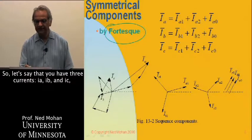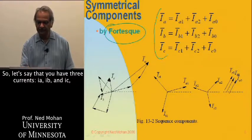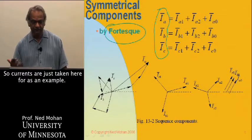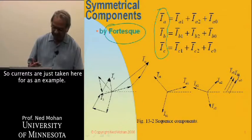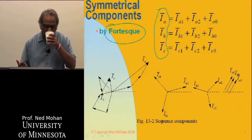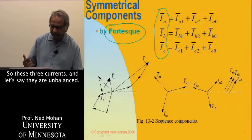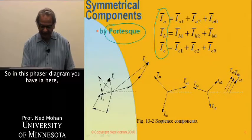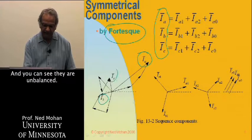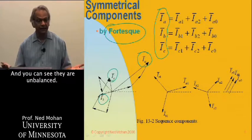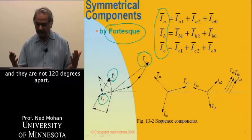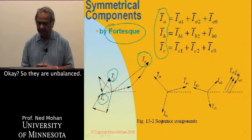Let's say you have three currents, Ia, Ib, and Ic. By the way, these could be voltages. Currents are just taken here as an example. These three currents, let's say they are unbalanced. In this phasor diagram, you have Ia here, Ib here, and Ic here. You can see that they are unbalanced. They are not equal in magnitude and they are not 120 degrees apart.